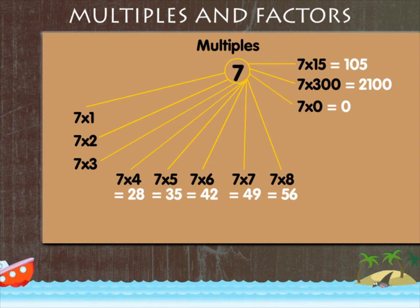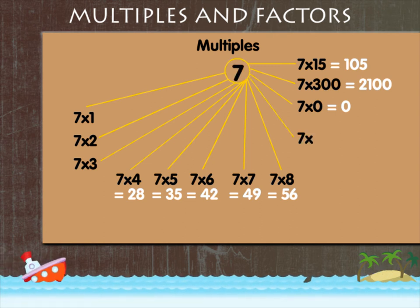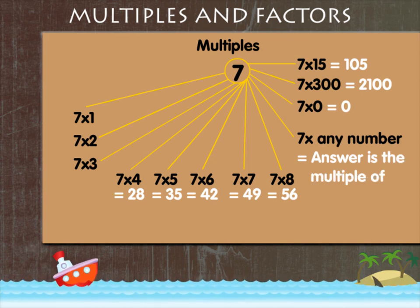Thus, what you get on multiplying 7 with any number is the multiple of 7.